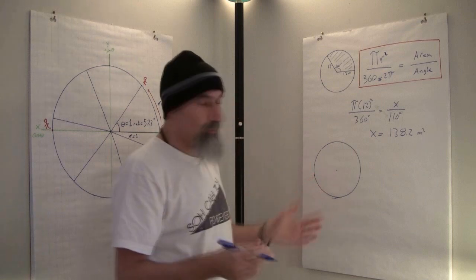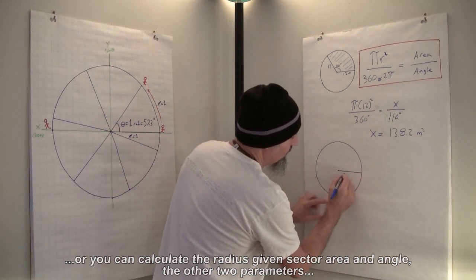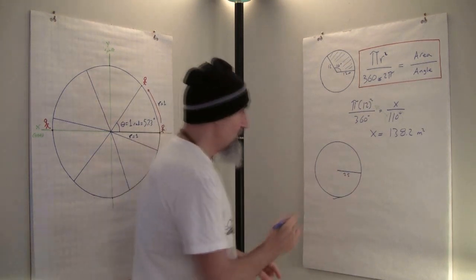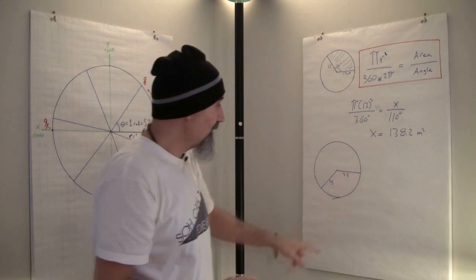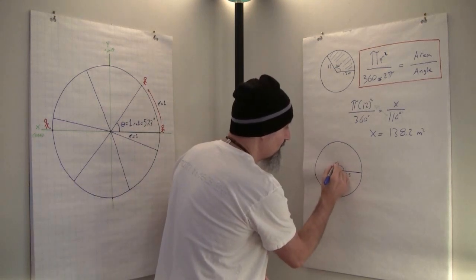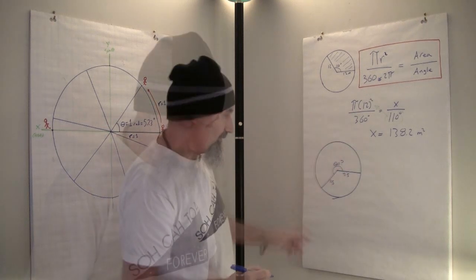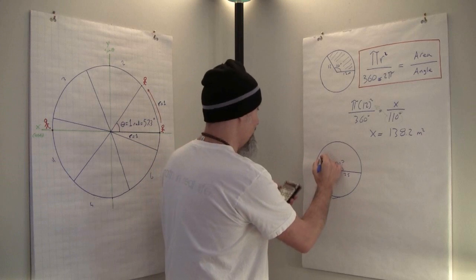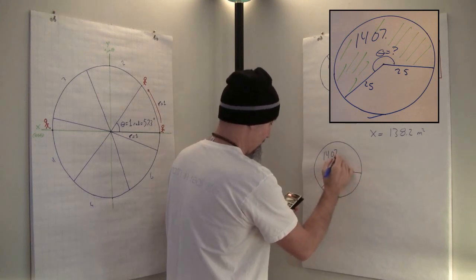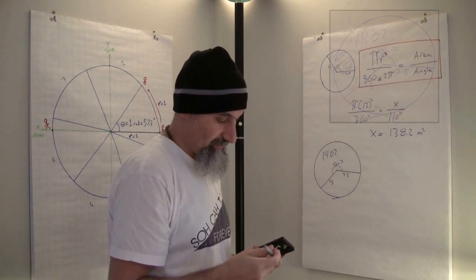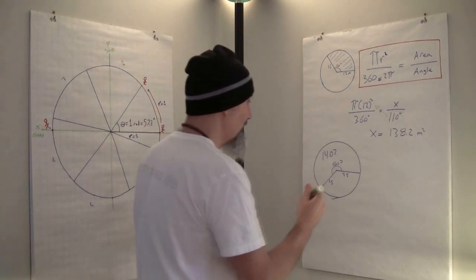The one thing you need for this is the radius. Let's use a radius of 25. The radius is still 25 going all the way around — it's a circle, the radius stays the same. We want to figure out the angle in radians, and the area I've given you is 1407.